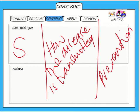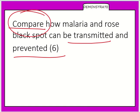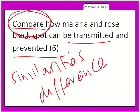Once you've completed the worksheet, you're going to answer a long answer question comparing how malaria and rose black spot can be transmitted and prevented. When comparing, you'll need to identify both similarities and differences. After that, you'll complete the protist and fungi review in your notebook.